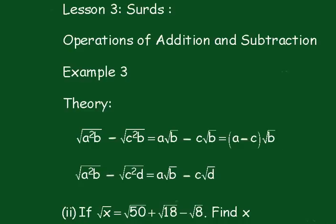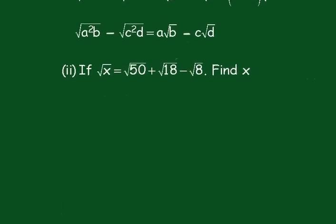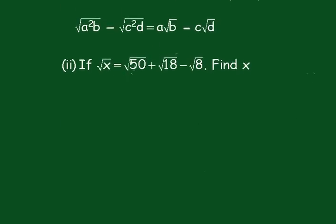So here's the next example to have a look at. If the square root of x equals the square root of 50 plus the square root of 18 minus the square root of 8, find what x is.